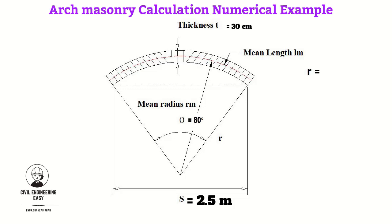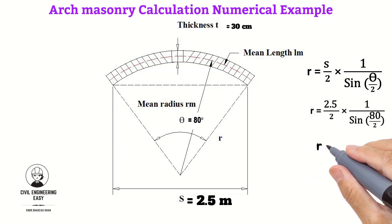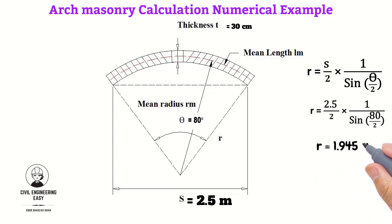As we have calculated, the relationship for the simple radius is r equals (s/2) multiplied by 1 divided by sine of (theta/2). Putting in the values, r equals 2.5 divided by 2, multiplied by 1 divided by sine of (80°/2). So the simple radius r equals 1.945 meters.